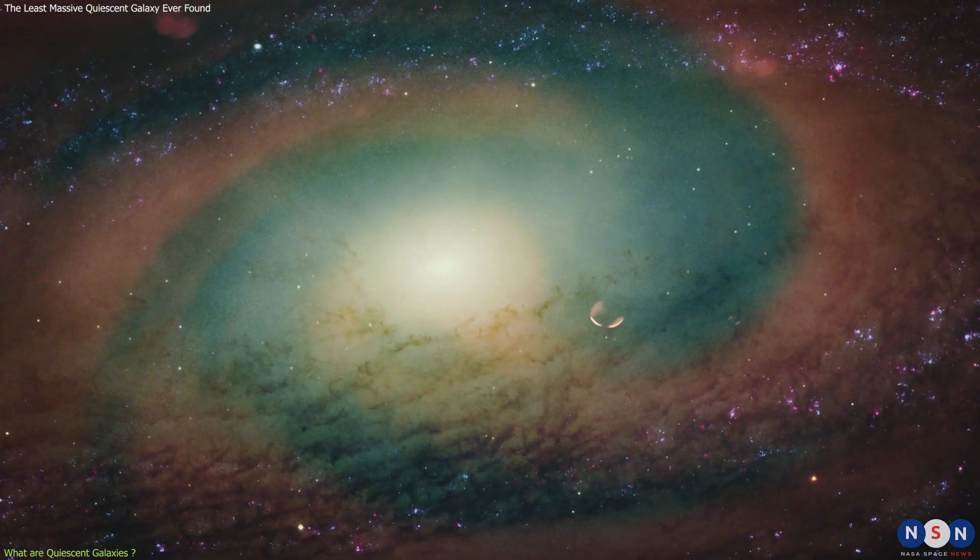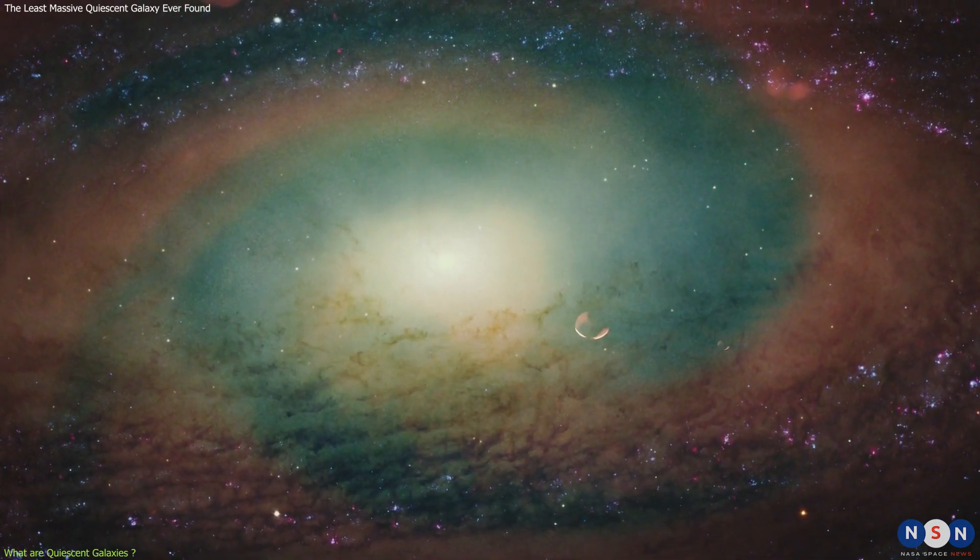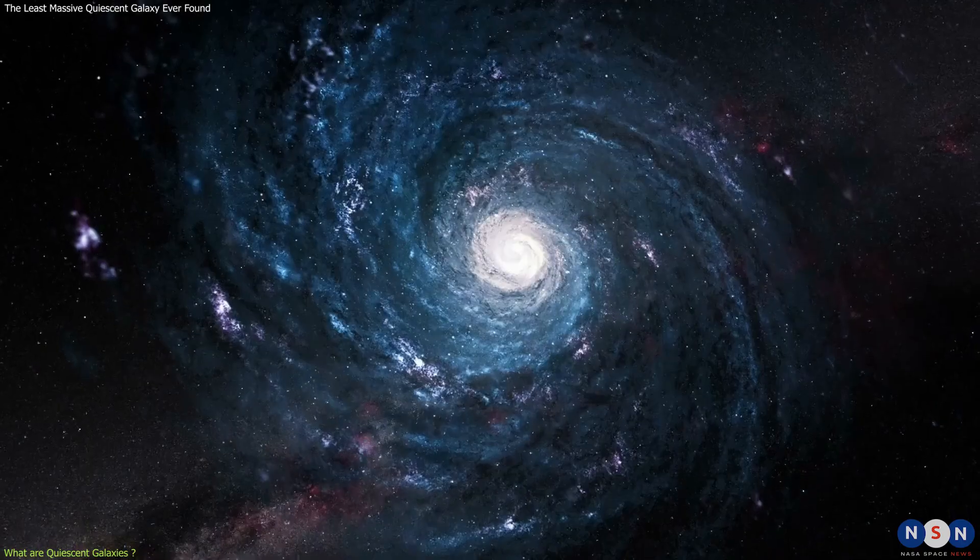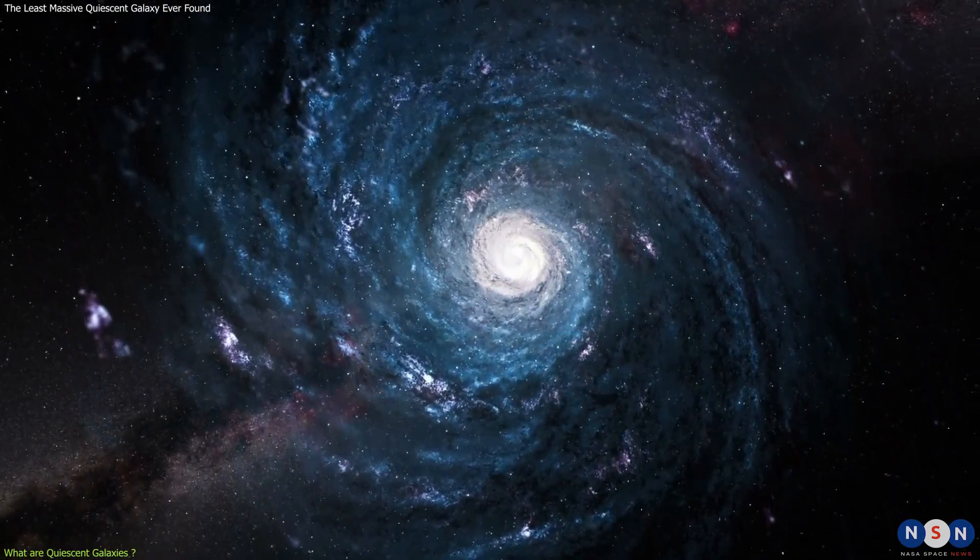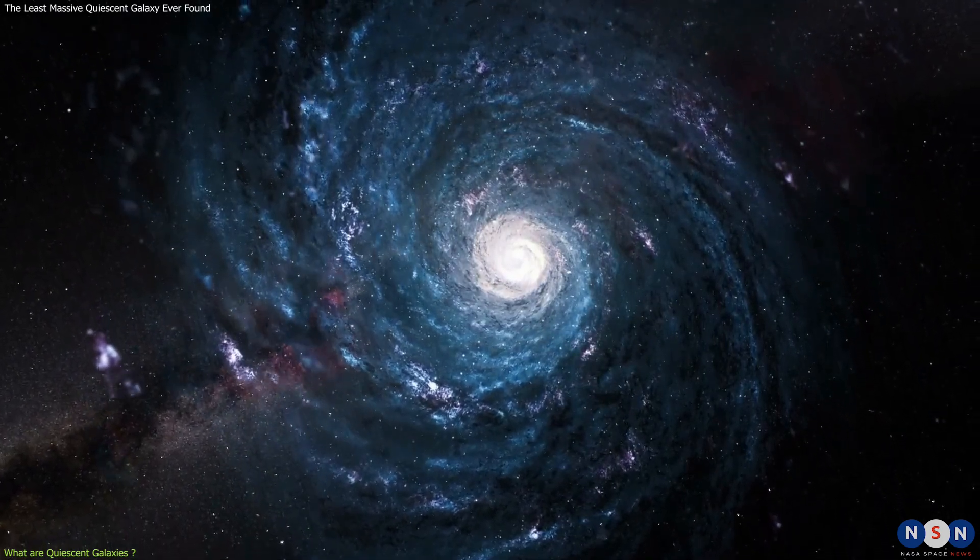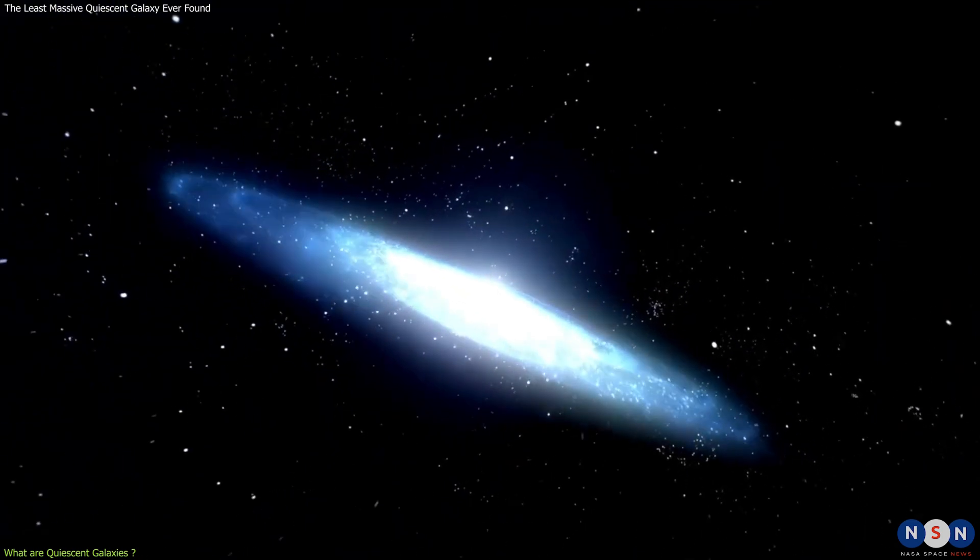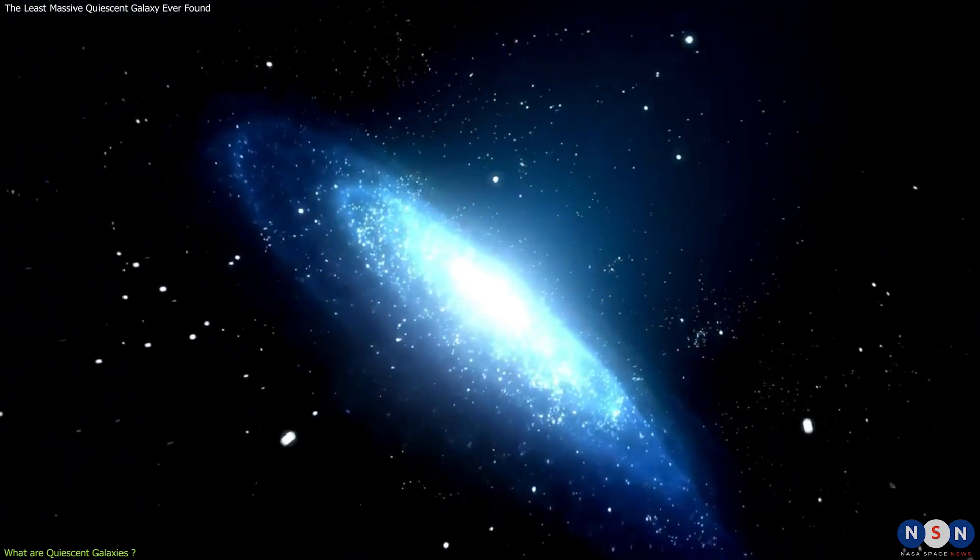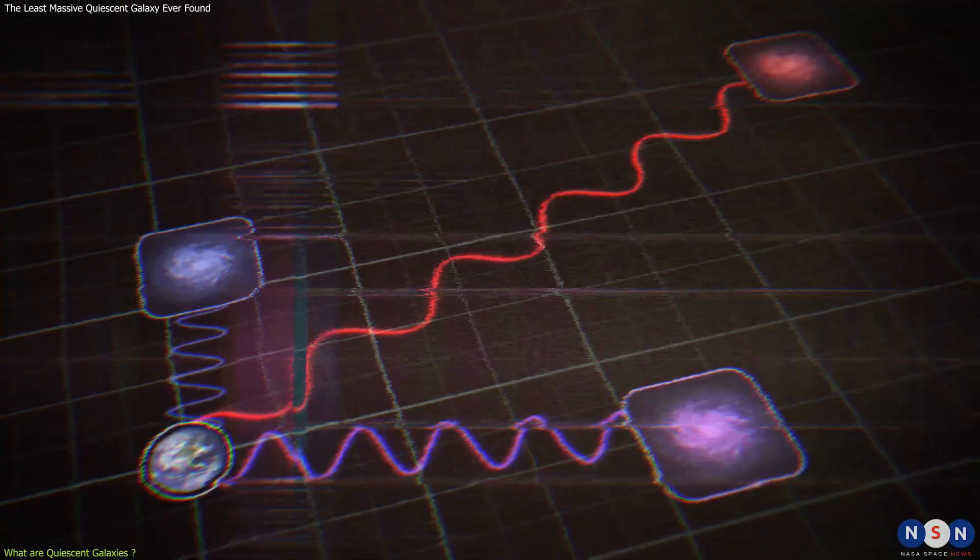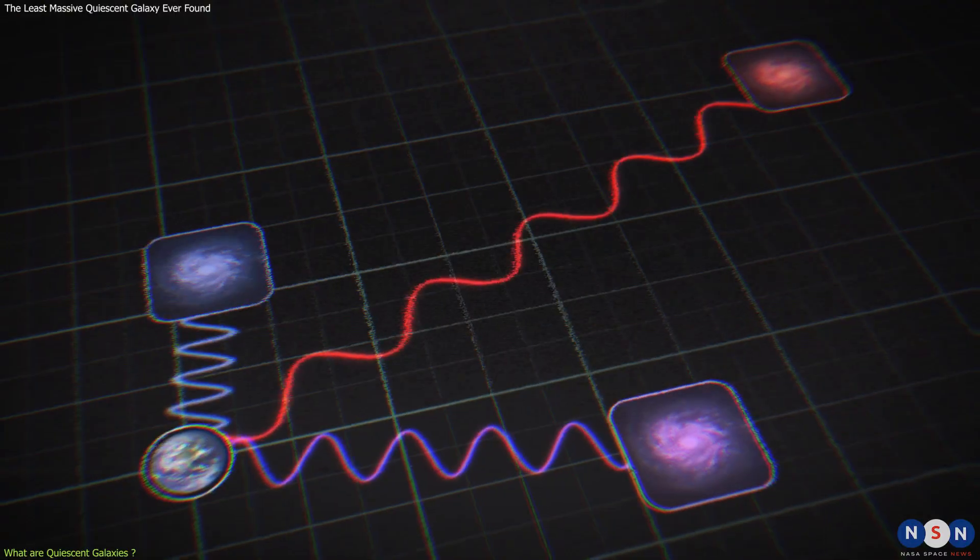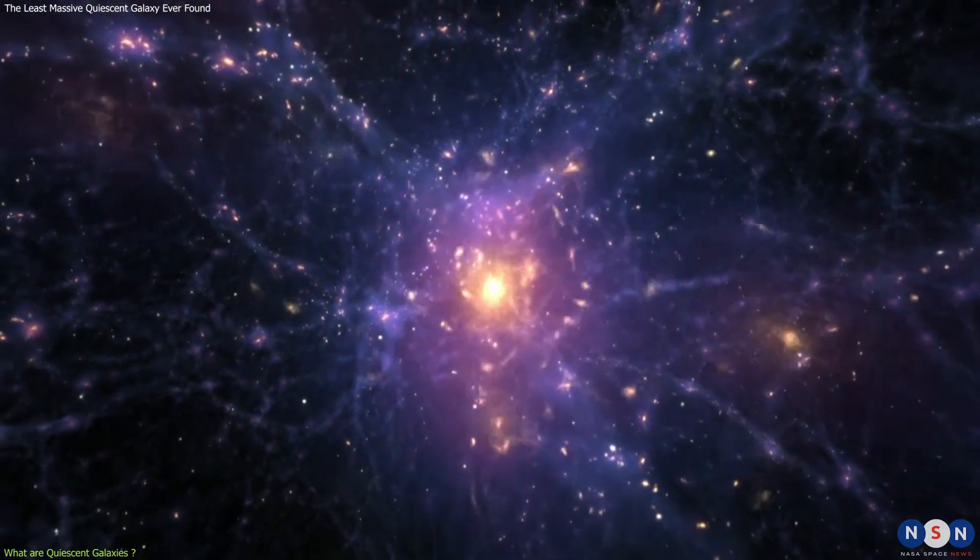These types of galaxies are very interesting for astronomers because they tell us about the history and evolution of galaxies in the universe. By studying their properties, such as their mass, size, shape, color, age, and chemical composition, we can learn about how they formed, when they stopped forming stars, and what processes quenched their star formation. We can also compare them with star-forming galaxies at different redshifts, which means different distances and times in the universe, to see how galaxies change over cosmic time.